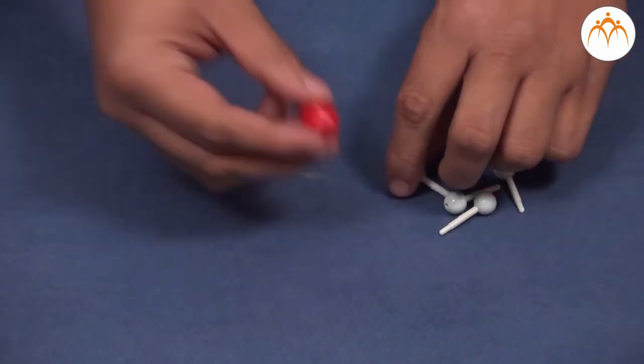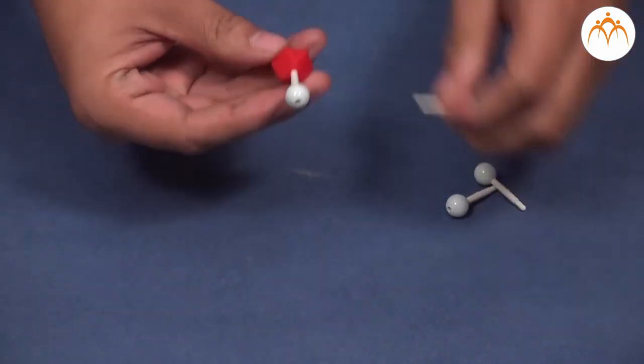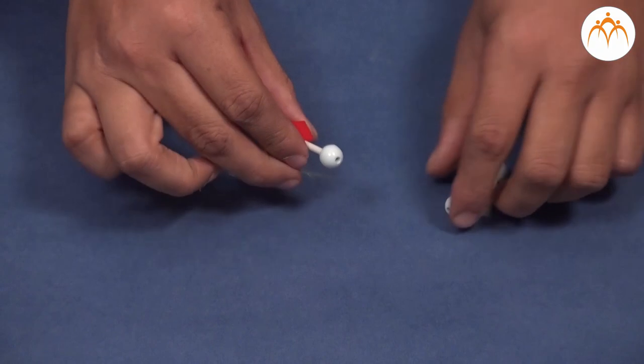Methane has the molecular formula CH4 and ethane has C2H6. So we will see how exactly these compounds are formed. Here we will form methane with one carbon and four hydrogen atoms to form its ball and stick model.